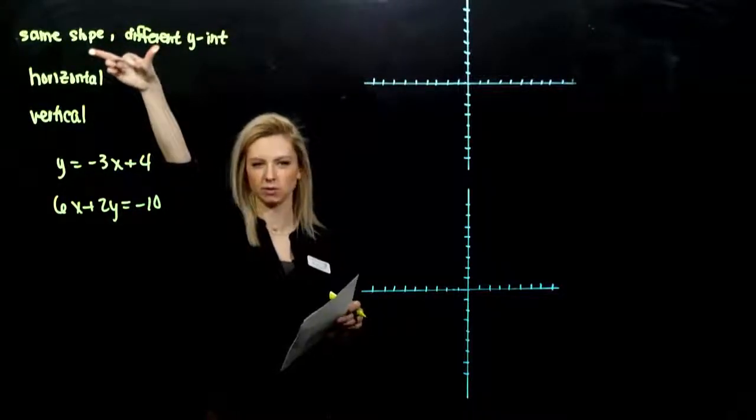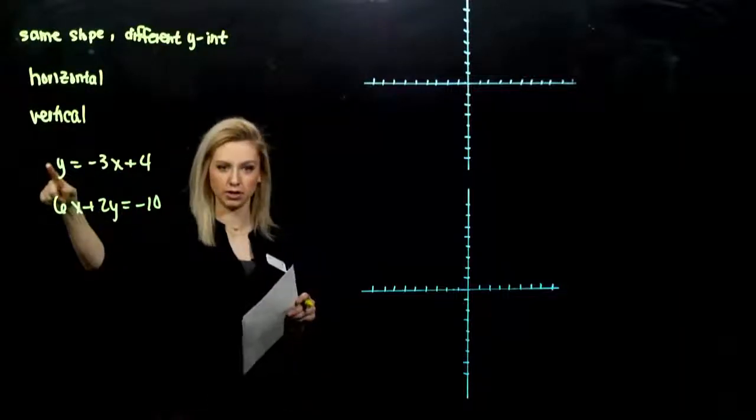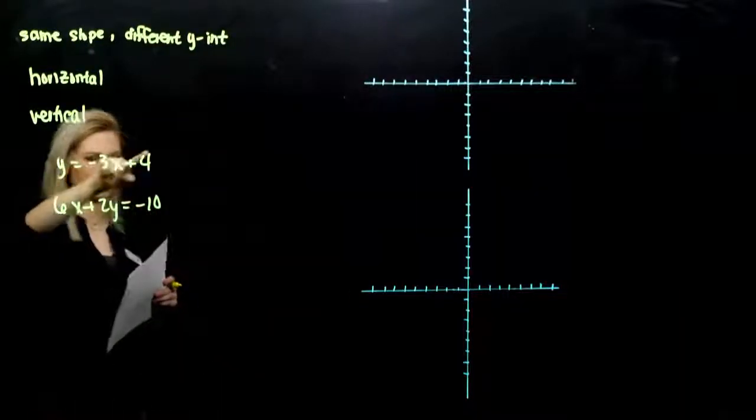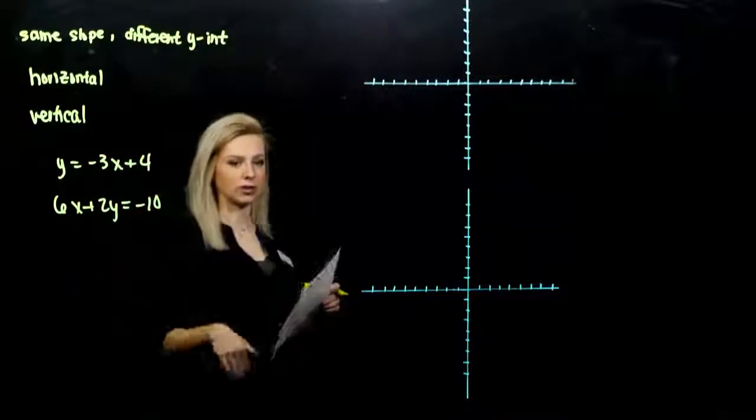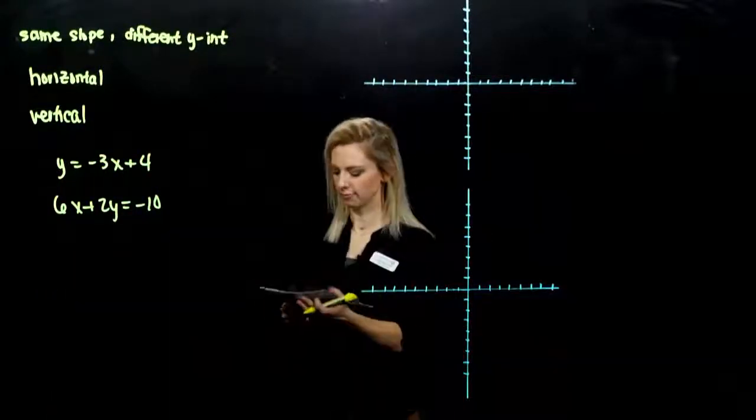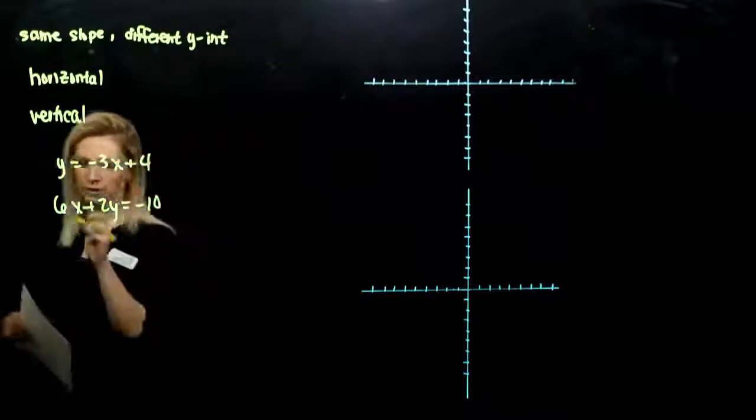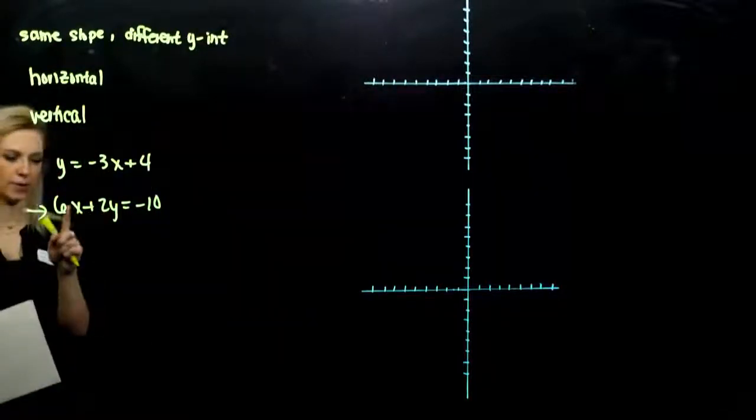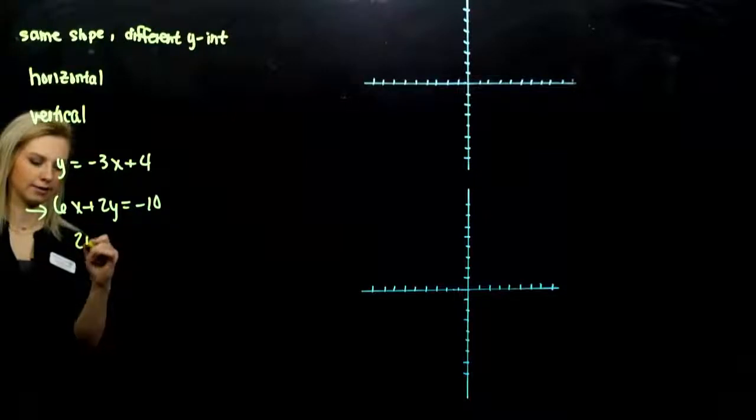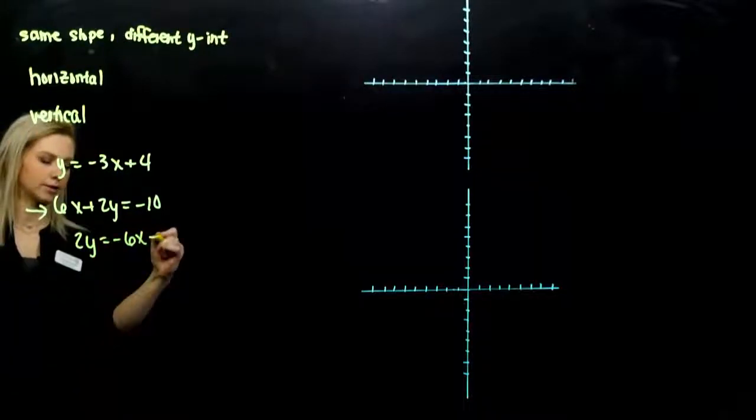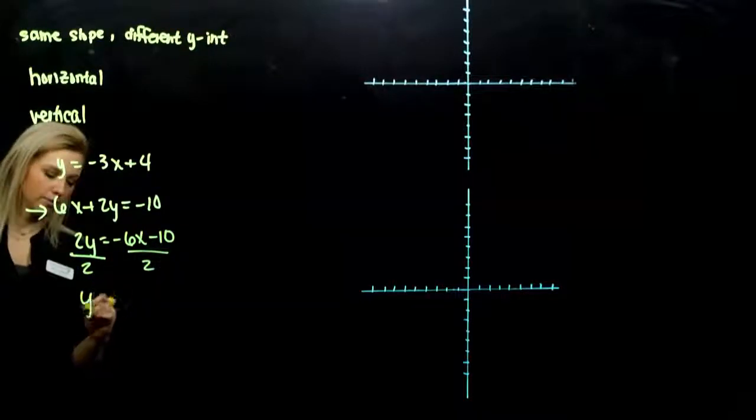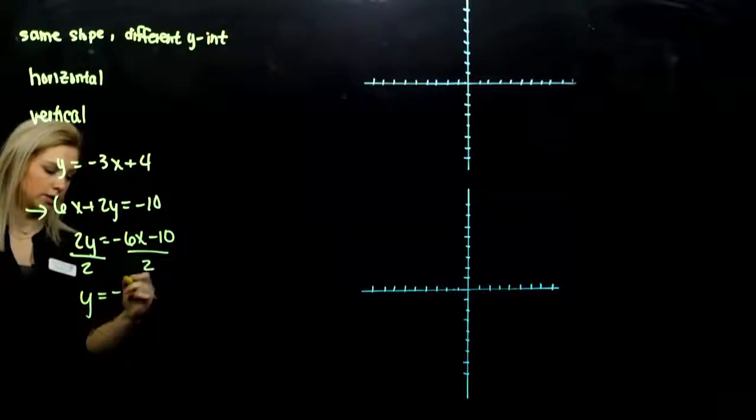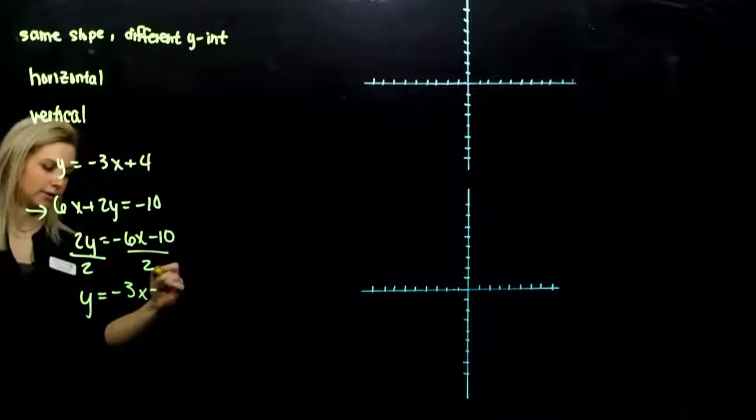So to be able to compare and talk about the slopes and the y-intercepts, they have to be in the same form, in that point-slope form. So the first one's good. We can pluck off the slope and the y-intercept, but the second one we have to do a little bit of work and solve for slope-intercept form first. So let's take that one and work on it. I want y on its own. I need to subtract 6x from both sides. Divide by 2 everywhere, so y is minus 3x minus 5.